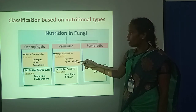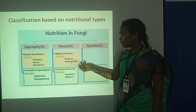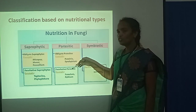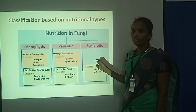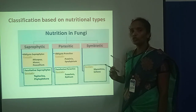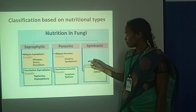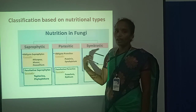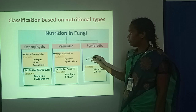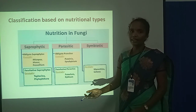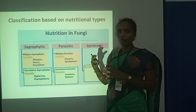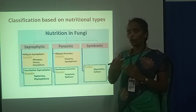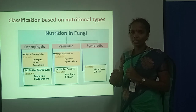Then we can see the parasitic fungi. Some fungi produce toxic substances. These toxic substances invade the host cell and damage the host. Then we can see the symbiotic fungi — symbiosis means both organisms are mutually benefited. For example, mycorrhizal fungi — mycorrhizal fungi means the interaction between the plant and fungi. Fungi provide nutritional supplements to the plant while taking sugar materials from the plant.